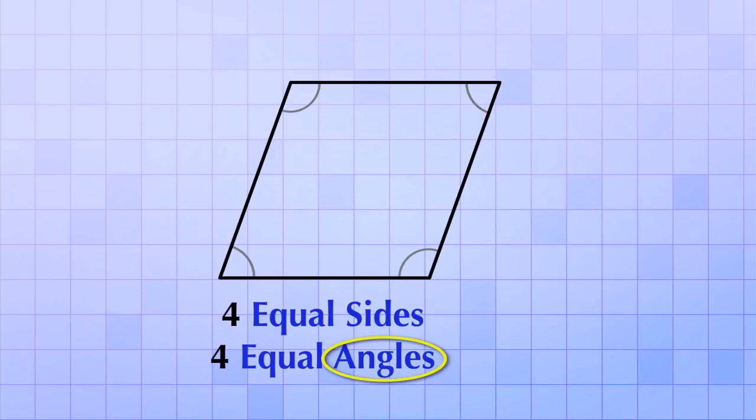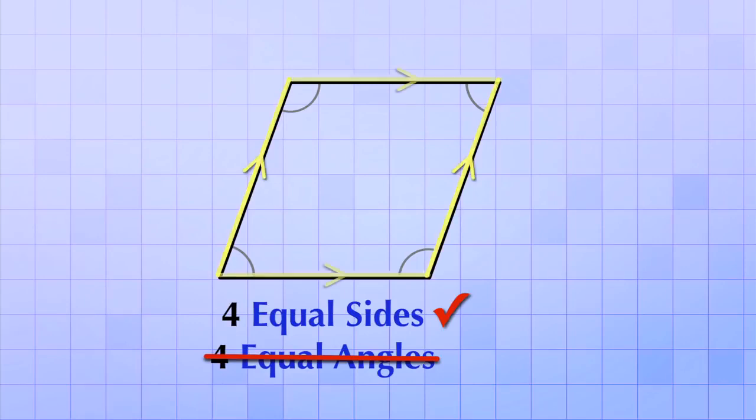Ah, what we have now is called a rhombus. A rhombus is a quadrilateral that still has four equal sides, but it does not have four equal angles. And once again, just like the square and rectangle, the rhombus is made from two pairs of parallel sides.